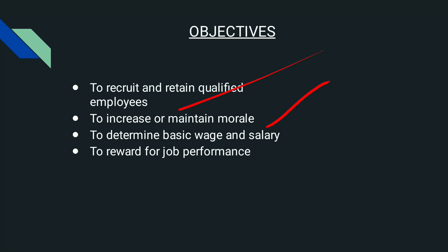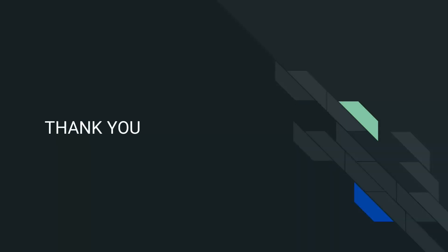The third objective is to determine basic wage and salary. The compensation plan or policy that the organization follows will determine the basic salary as well as basic wage. The fourth objective is to reward for job performance — the employee will get a reward for job performance through compensation. These are the main objectives of compensation management.